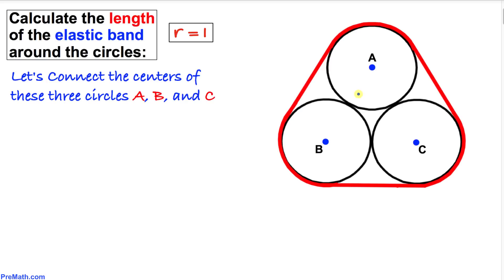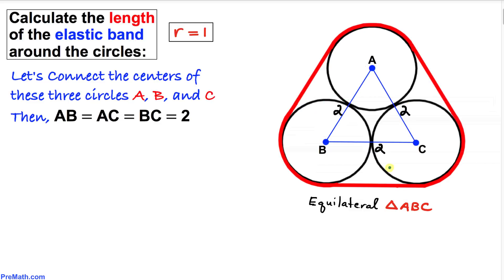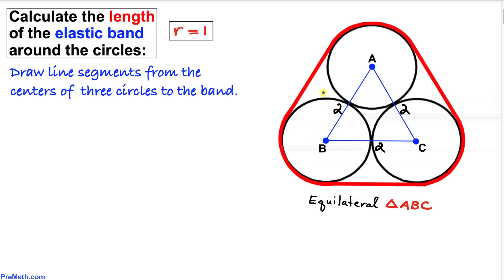Our first step is to connect the centers of the three circles. We connect center A to center B, B to C, and A to C. Since the radius of each circle is one, the distance between any two centers is 1+1=2. Therefore AB, BC, and AC are each equal to two, giving us an equilateral triangle ABC with side length two.